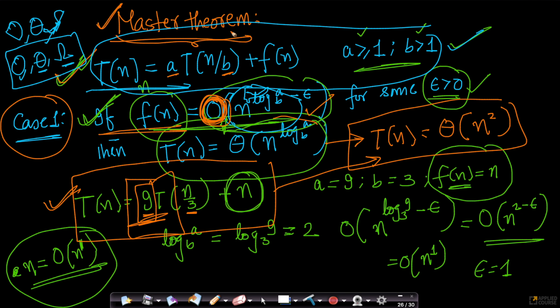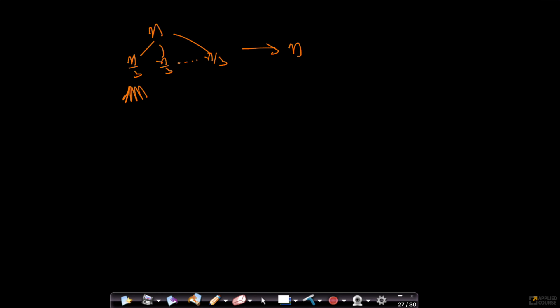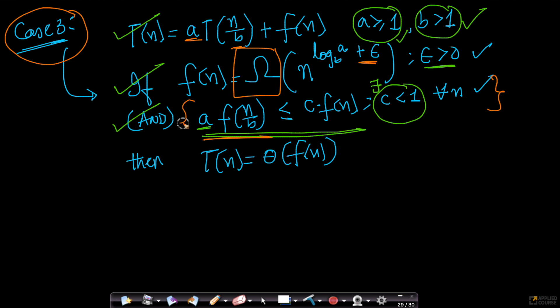When preparing for GATE, I used to write down master theorem before the exam because I'd often forget it — especially the second condition in Case 3. But if you just write it down on a piece of paper and digest it carefully, you will remember everything. It differs from person to person, but it is not very hard.